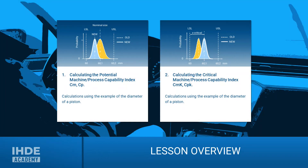This lesson is divided into two chapters. In the first chapter we will use an example to calculate and evaluate the potential machine or process capability. In the second chapter we will do the same for the critical machine and process capability.